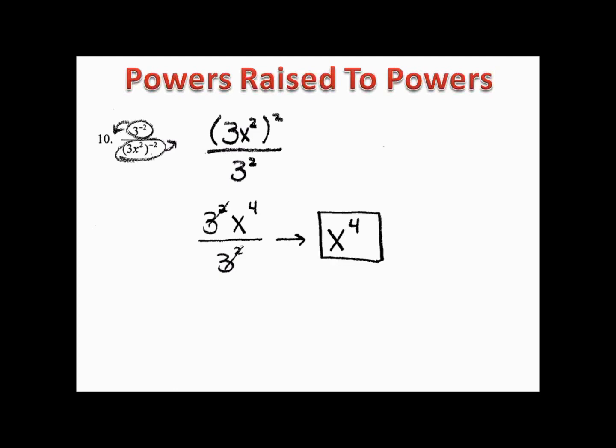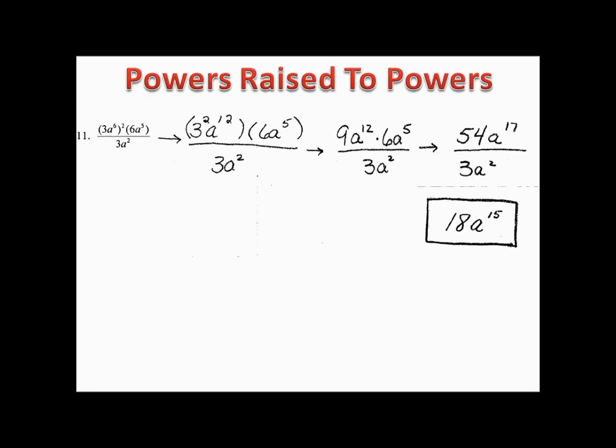Example eleven involves multiplication, division, and (3a⁶)² all together. We begin by distributing the square: 3² · a¹² times 6a⁵ over 3a². Three squared is 9, giving us 9a¹² times 6a⁵ over 3a². Multiplying on top gives 54a¹⁷ over 3a². Dividing gives us 18a¹⁵.